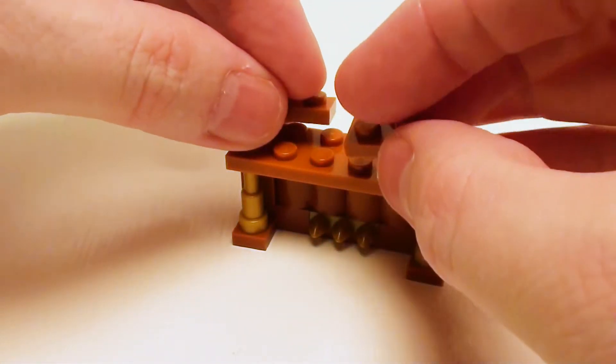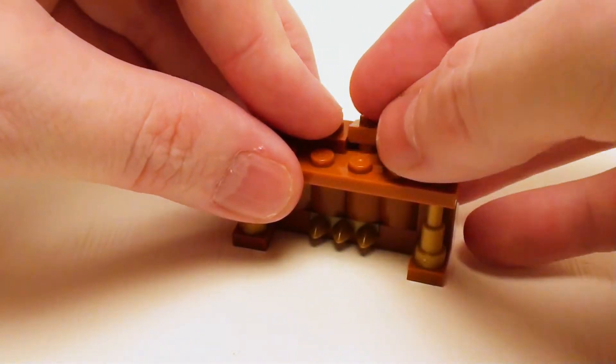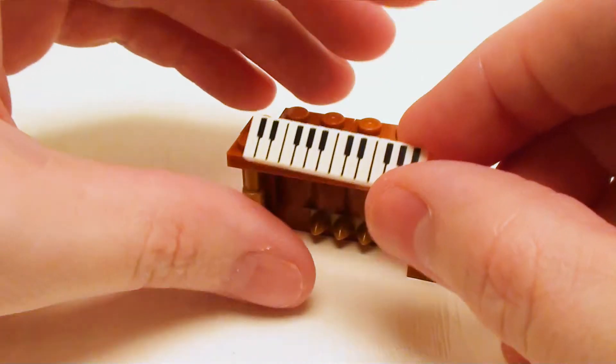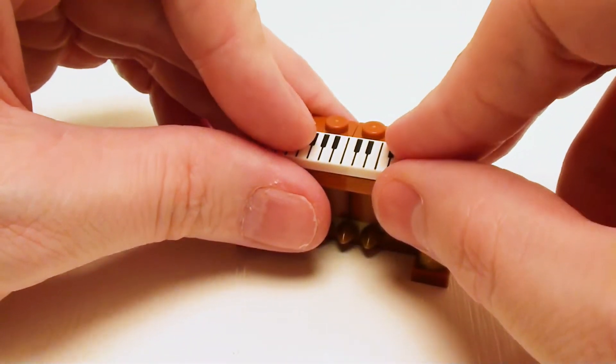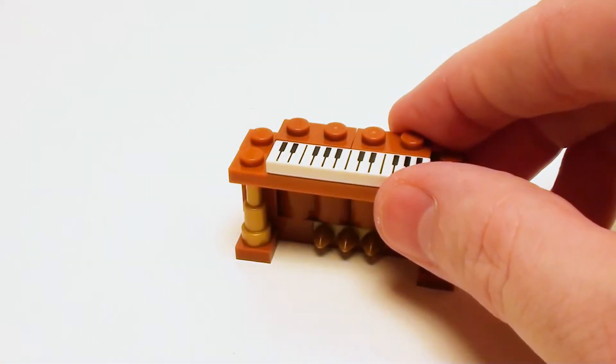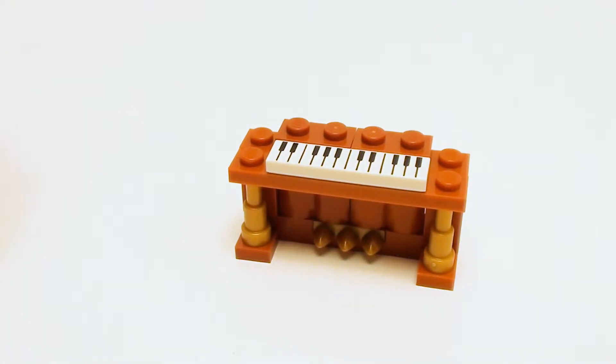Now in the back, set down a pair of 1 by 2 plates. For a set of keys, take a 1 by 4 flat tile that has a keyboard print. Now if you don't have this, you can always use a regular 1 by 4 flat tile.